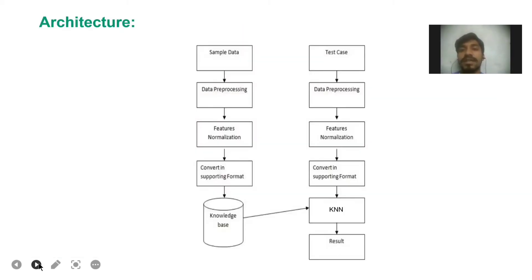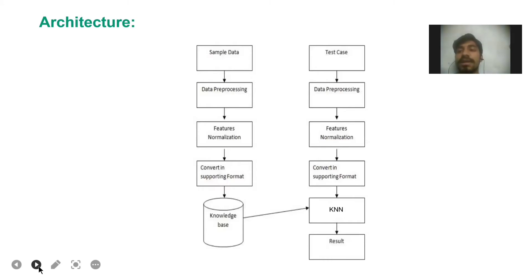The architecture of our crop yield prediction system is: we take sample data, which is preprocessed — cleaned and duplicate data is deleted. Then the preprocessed data is sent to normalization, which organizes the data in the dataset and reduces redundancy and dependency. These normalized data are then sent to the KNN algorithm and we get the results.